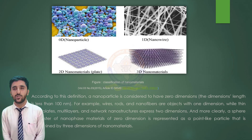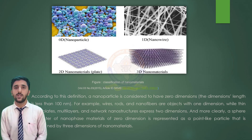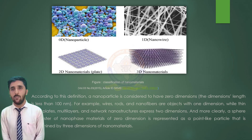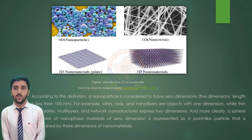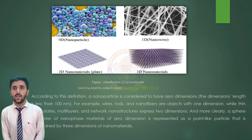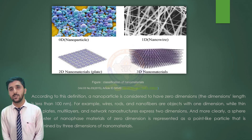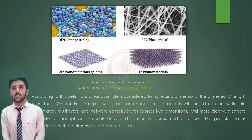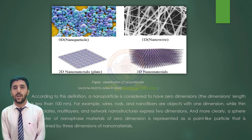Nanomaterials are classified into nanostructured and nanophased materials. According to this definition, a nanoparticle is considered to have zero dimensions, with dimension length less than 100 nanometers. For example, wire, rod and nanofibers are objects with one dimension, while thin film, plate, multilayer and nanostructures represent two dimensions. More clearly, a sphere or cluster of nanophased material of zero dimension is represented as a type of particle determined by 3D nanomaterials.